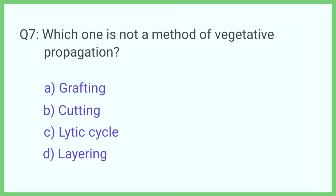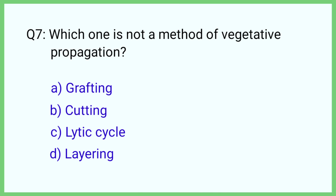Question number 7. Which one is not a method of vegetative propagation? The correct answer is option C: Lytic cycle.